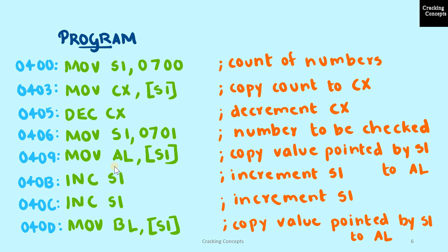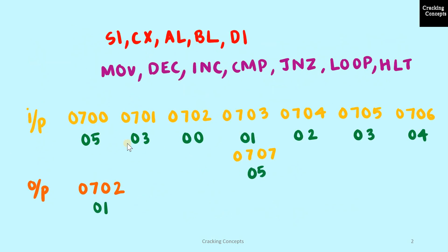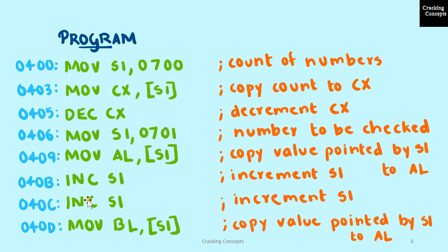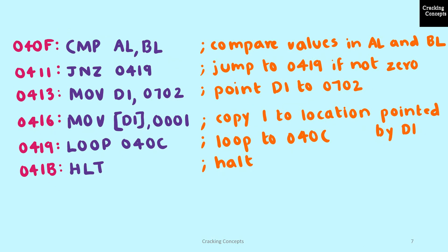Next we increment SI by 1 — a single-byte instruction. We then increment SI again by 1 — another single-byte instruction. This is done because after getting the number to be searched for, we need to skip a location before reaching the start of the series — that is why we perform the increment twice. Next, we copy the value pointed by SI, which is the beginning of the series, to register BL — a 2-byte instruction.